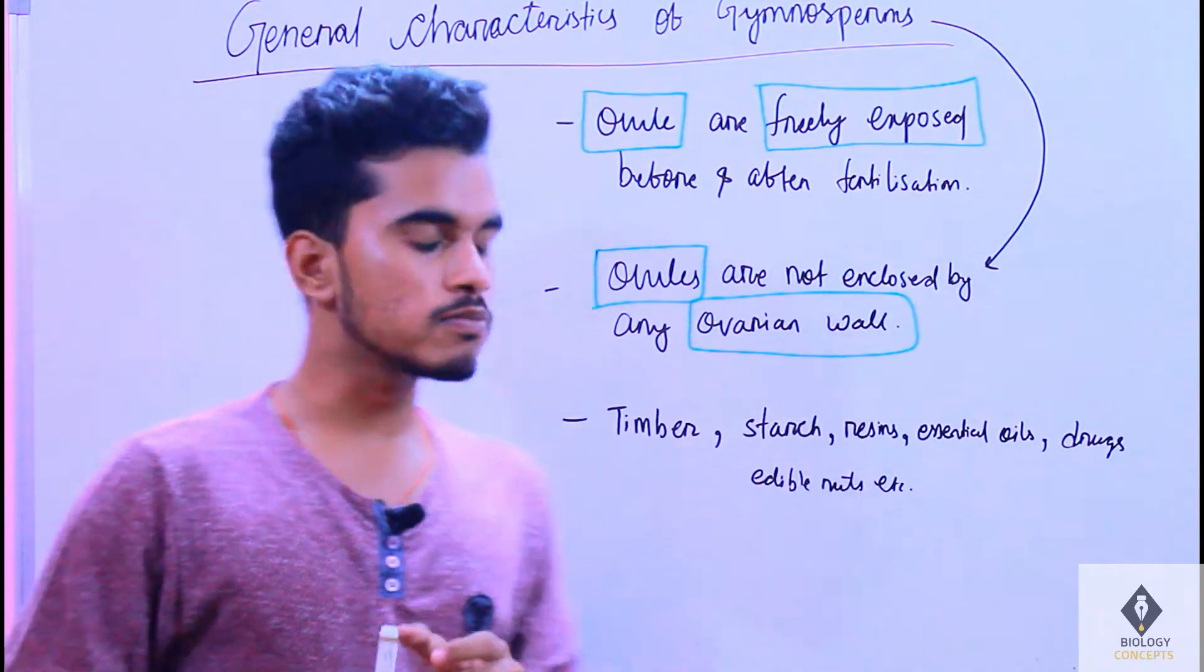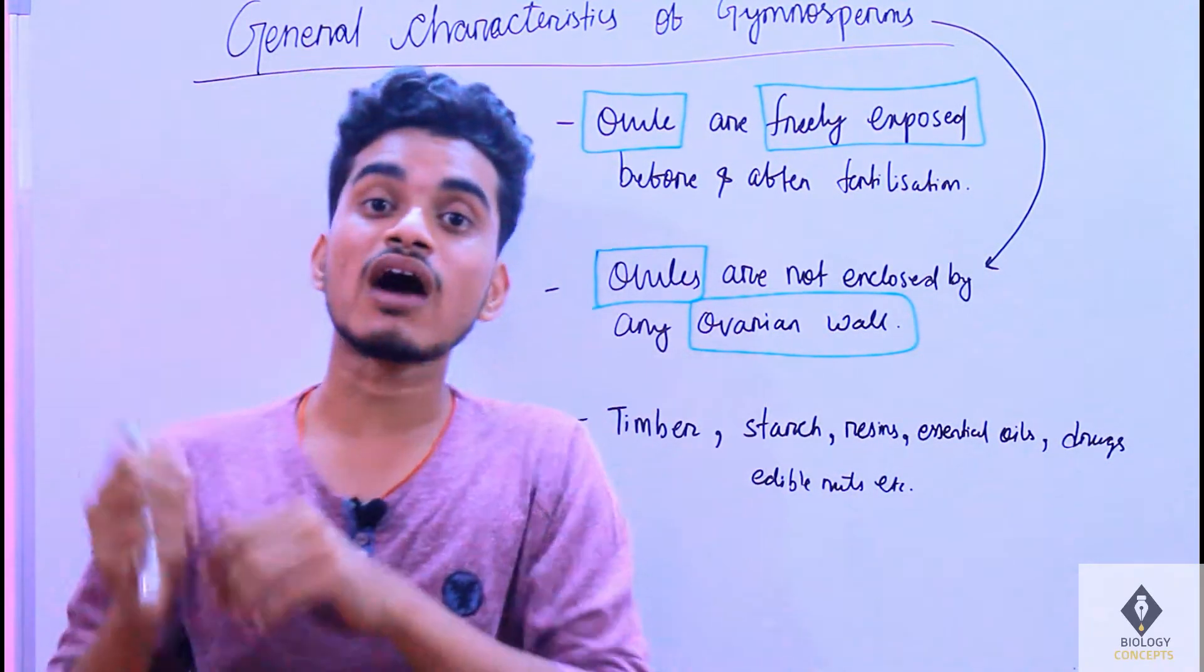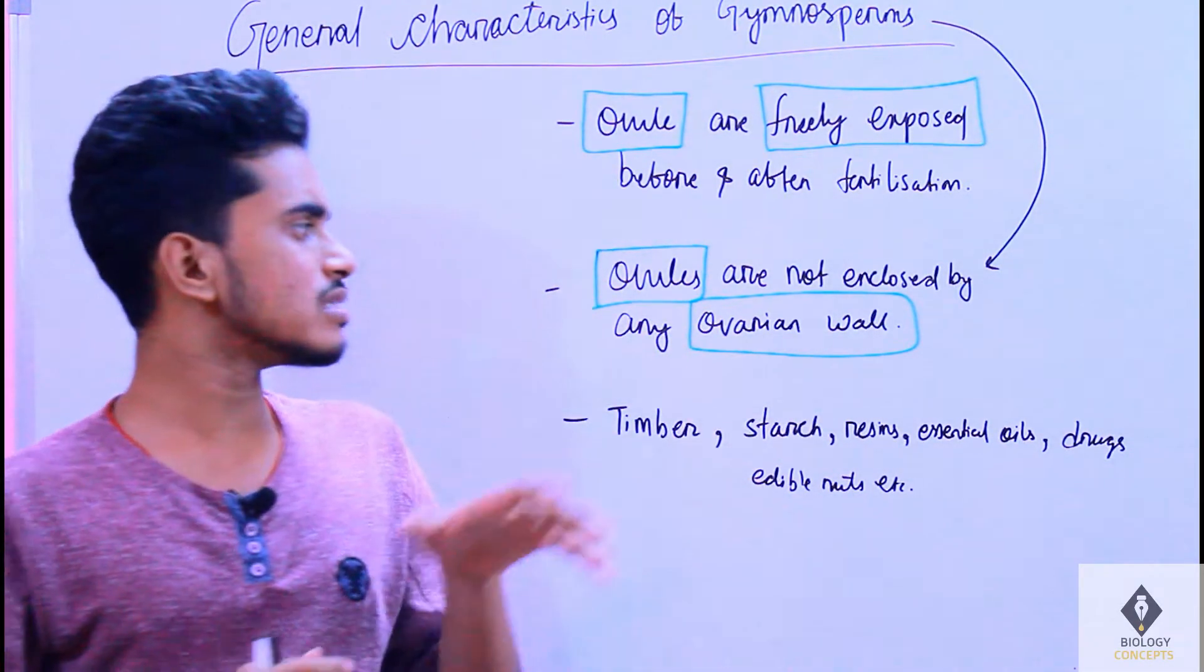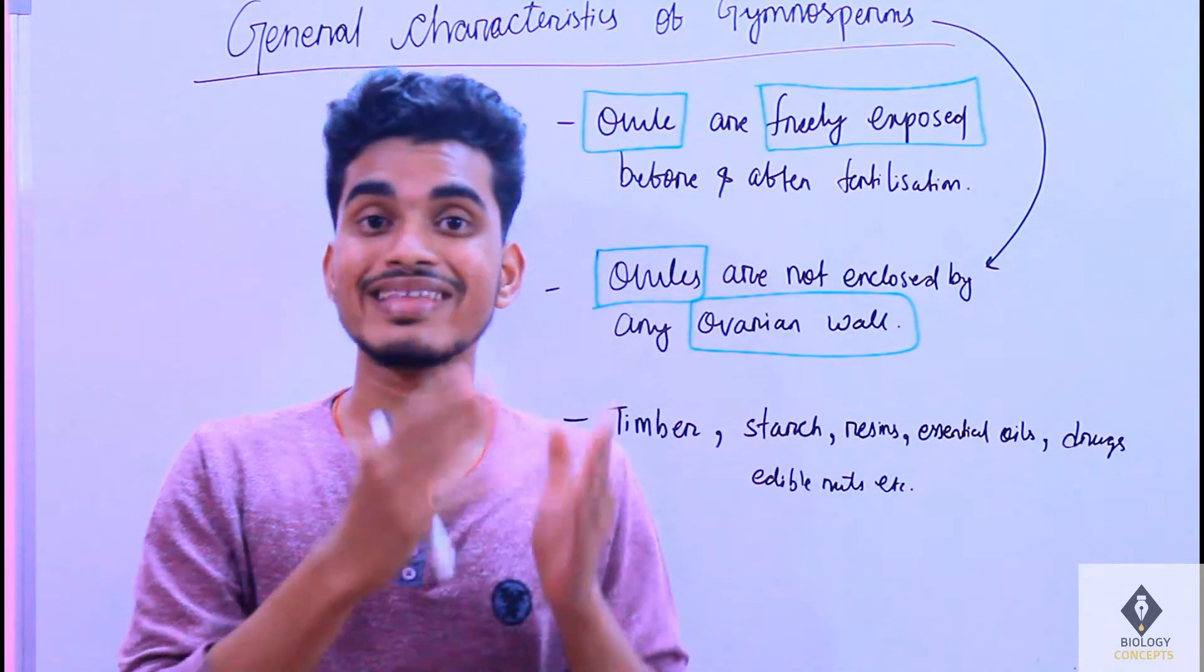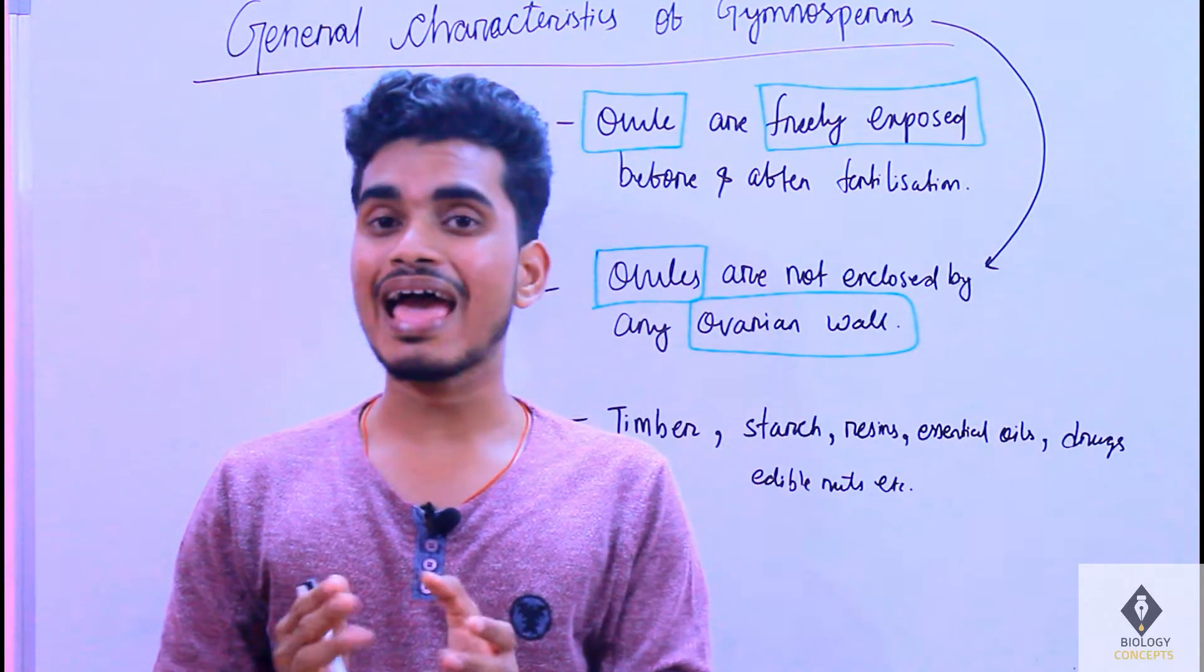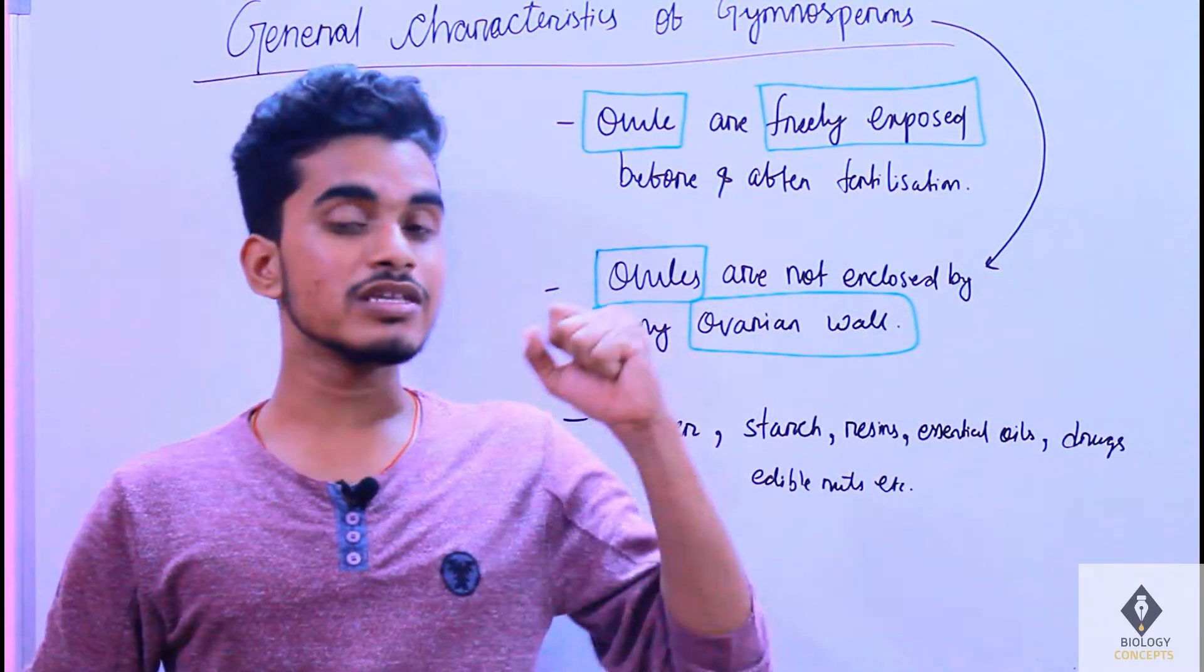Coming to the next part of general characteristics of gymnosperms, ovules are freely exposed before and after fertilization. The next point is ovules are not enclosed by an ovarian wall. That is the reason why these gymnosperms don't have any ovaries.